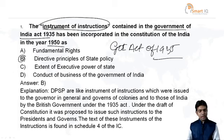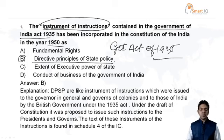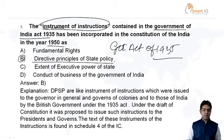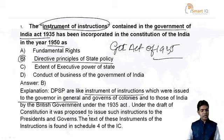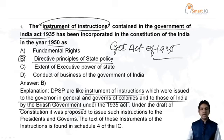The answer is Option B — the directive principle of state policy. The directive principle of state policy acts as an instrument of instruction to the Government of India and the State Government. The directive principle of state policy is like an instrument of instructions which were issued to the Governor General and Governors of colonies and to those of India by the British Government under the Government of India Act of 1935.